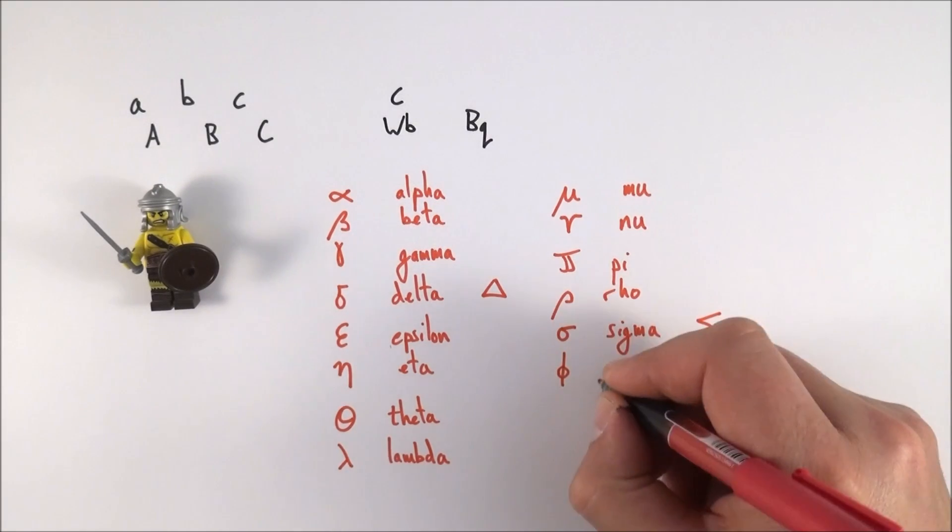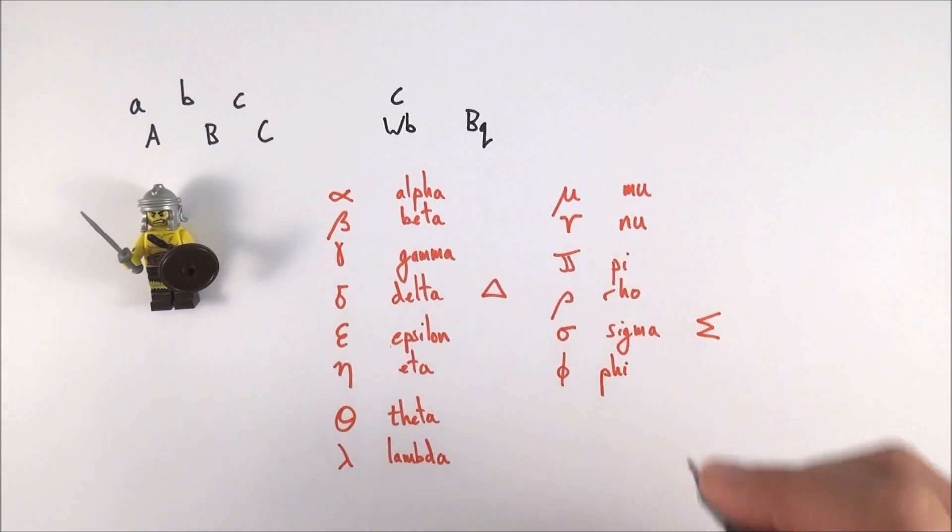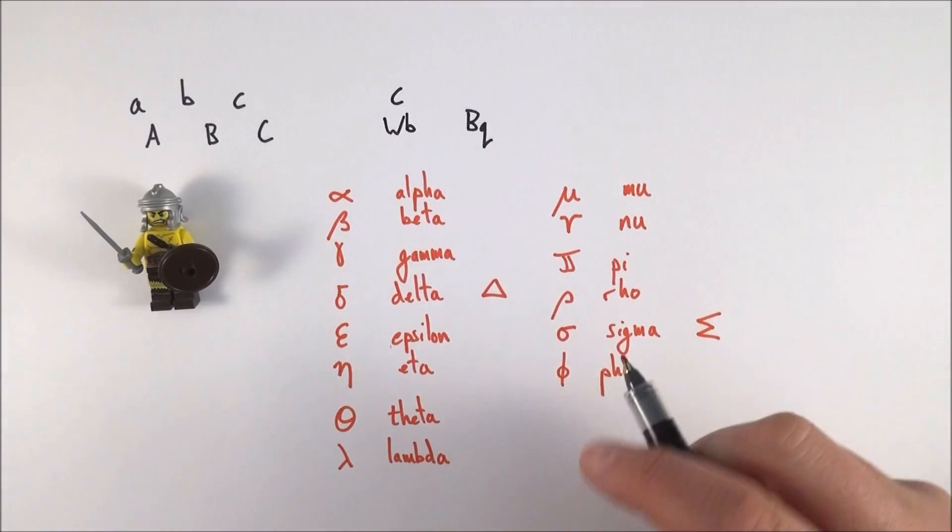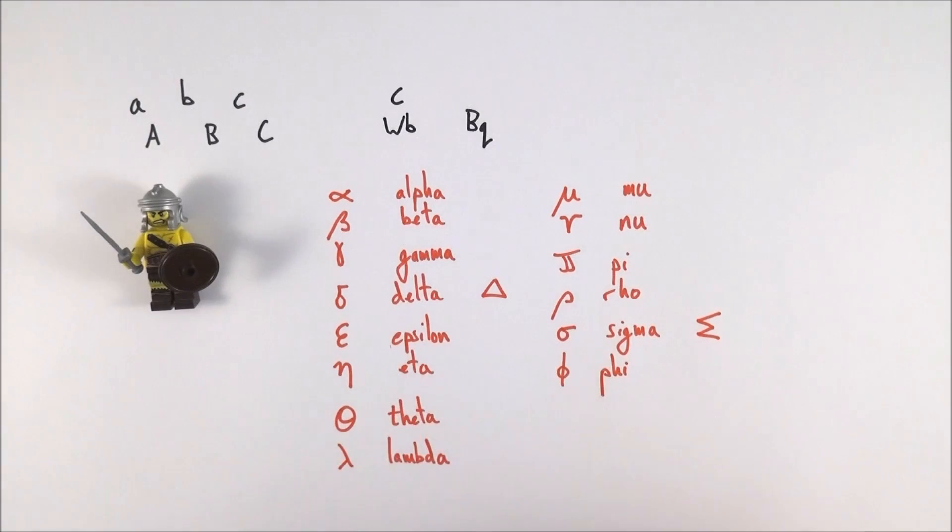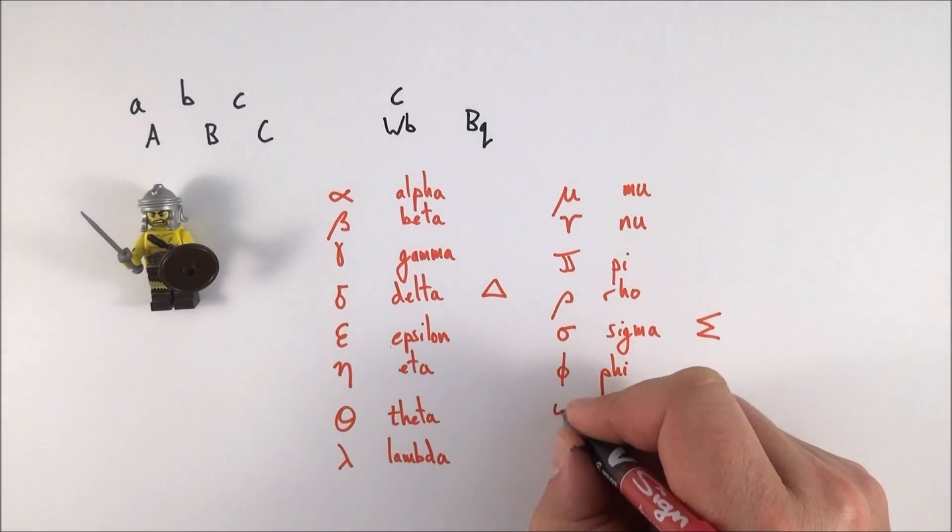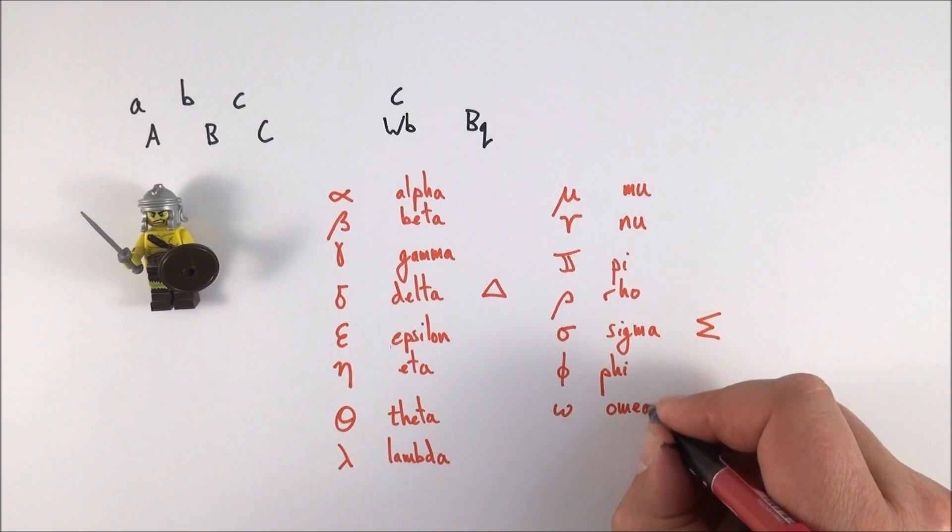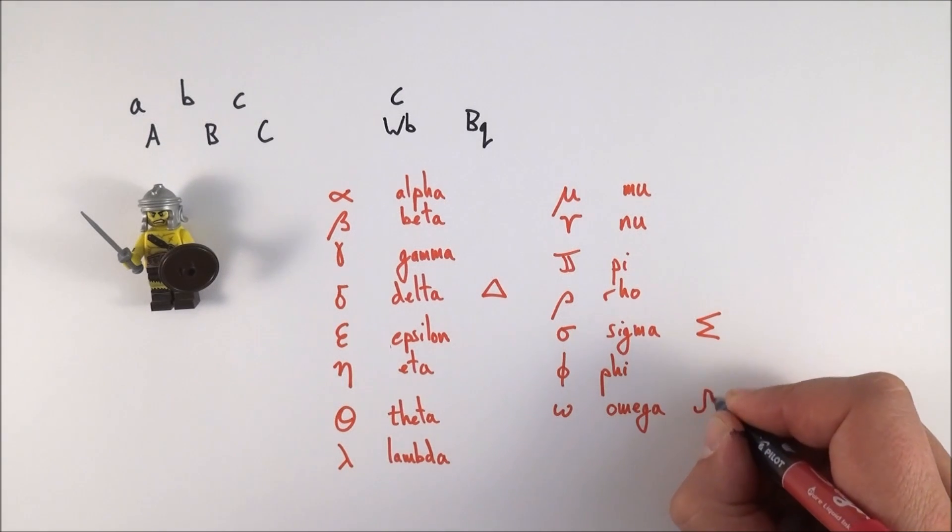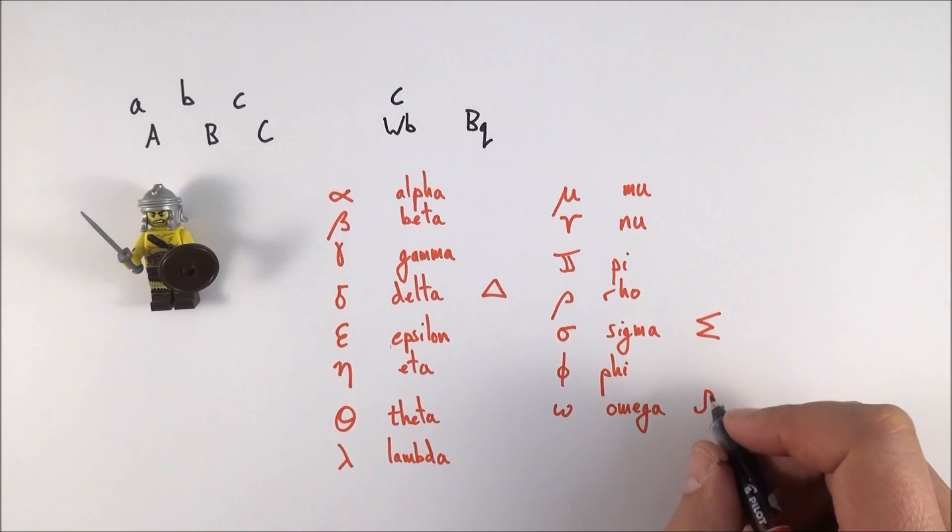The next letter is the letter phi. This is used when we're looking at things like flux density and magnetic fields in year 13. This is like a circle with a line that comes down through the middle. And then the last letter that we tend to use is omega. It's basically like a really curly w, and this lowercase curly w is the letter omega, used for things like angular frequency. But we also use the capital omega, which is this symbol here, and that's what we measure or that's the symbol that we use for the unit of ohms. So omega and ohms.